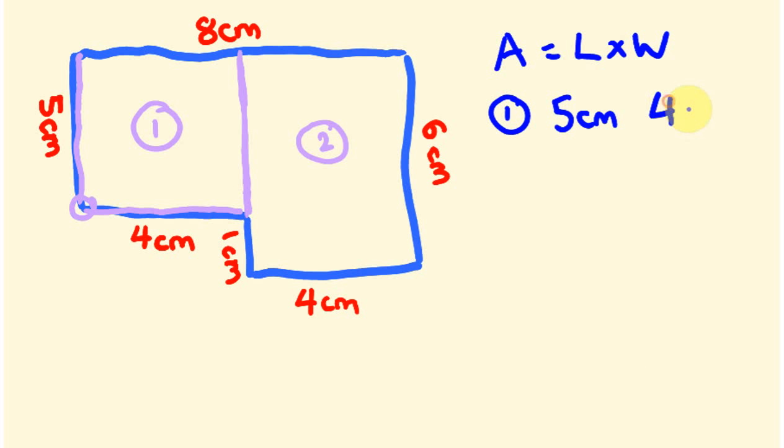Going up this way, we have 5cm, and going this way, we have 4cm. The other reason I do this is because people sometimes get stuck about which ones are multiplied. Make sure that you're not starting here and going all the way across. You're only going to here. So 5 times 4, 5cm times 4cm. The area of shape 1 is going to be 20cm squared.